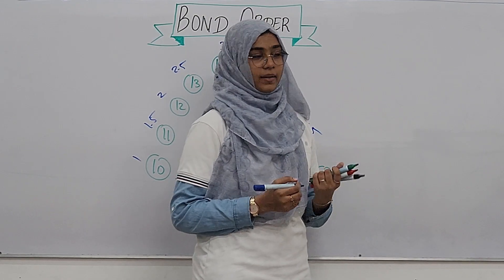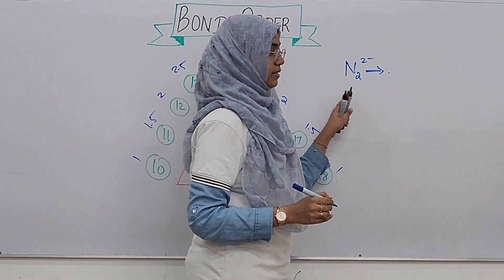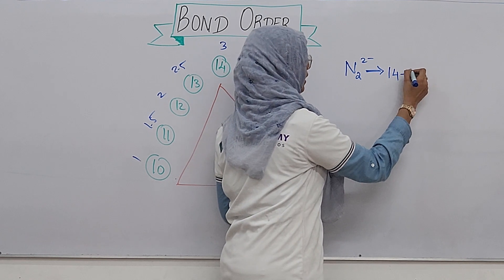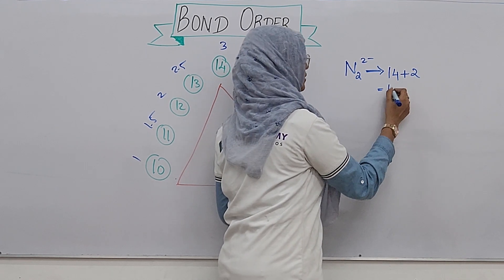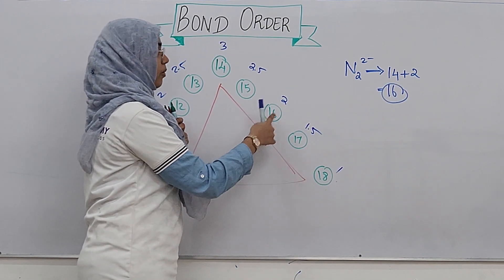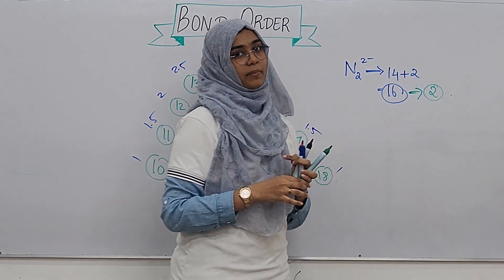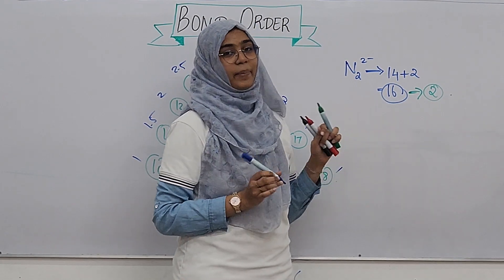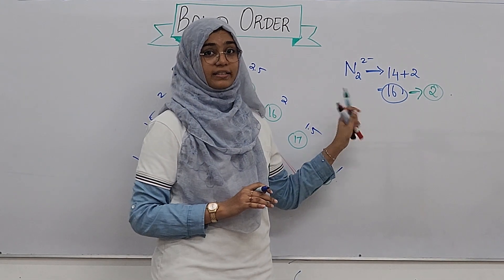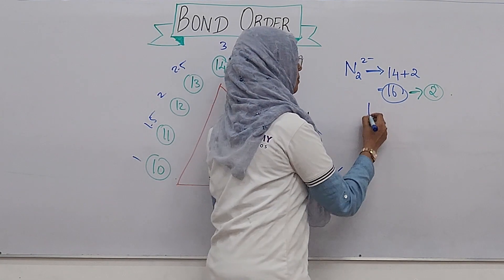Here is another example: N2²⁻. N2 is 14 electrons. For 2 minus, we add 2, so 14 plus 2 equals 16. The bond order for 16 is 2. To predict the magnetic nature: 16 is an even number, but 16 is an exception case, so N2²⁻ is paramagnetic.